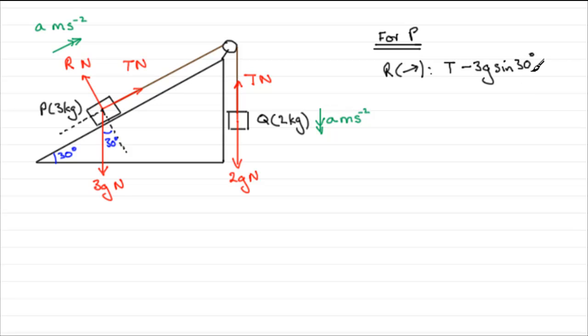So we've got the component down the plane, then, is 3G sin 30. And it acts in the opposite direction to this sense. So it's going to be minus 3G sin 30. Now this is the resultant force wanting to accelerate the particle up the plane. And remember, force, the overall resultant force, is equal to mass times acceleration by Newton's law of motion. So the mass is 3, and the acceleration is A. And that's our first equation.